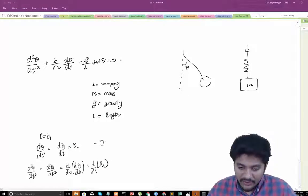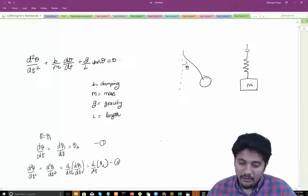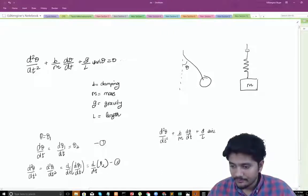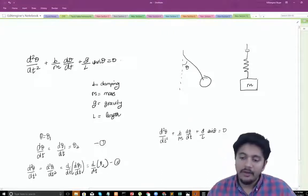So let's call this as relation number 1 and relation number 2 and if we go back to our original ODE which is nothing but d square theta by dt square plus b by m multiplied by d theta by dt plus g by l sin theta equal to 0.